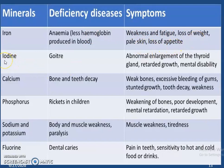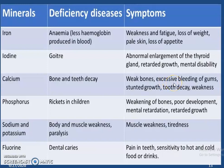If we have a deficiency of iodine in our diet, we suffer from goiter, and its symptoms are abnormal enlargement of the thyroid gland, retarded growth, and mental disability. If we have deficiency of calcium, we suffer from bone and teeth decay. Symptoms are weak bones, excessive bleeding of gums, stunted growth, tooth decay, and weakness.